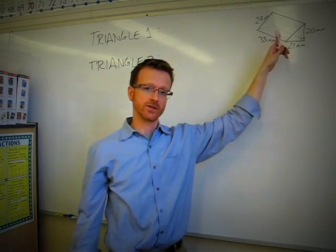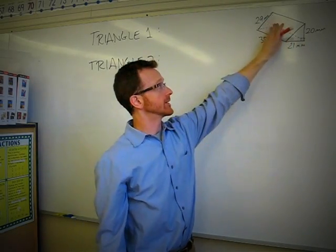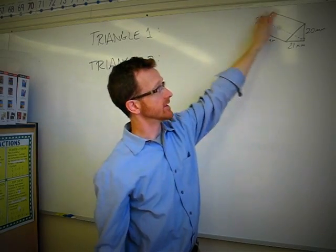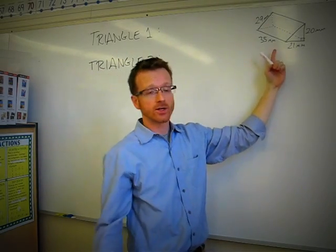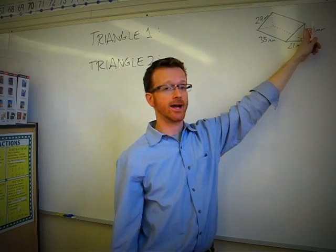There are also rectangles on this triangular prism. Rectangle one would be this face that's facing here. Rectangle two, we could call the bottom. And rectangle three, the side.